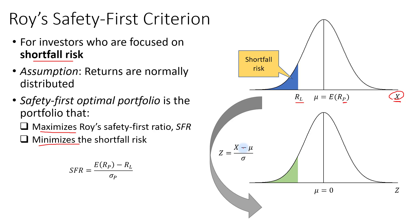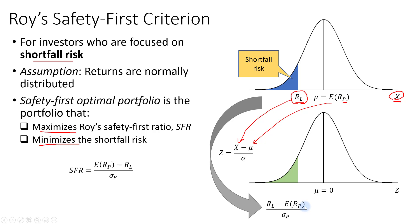If we apply the Z-score formula to the specific value R sub L, the minimum acceptable return, we substitute X as R sub L and the mean as the expected return on the portfolio. Upon substitution, we get a transformed formula at this point on the distribution, and the mean now becomes zero for the standard normal random variable.